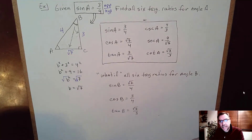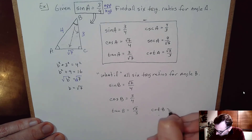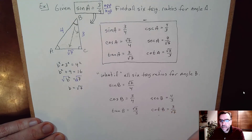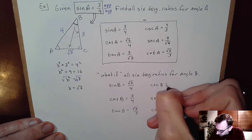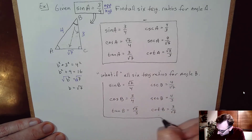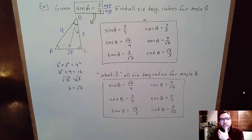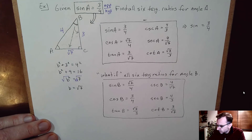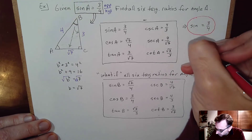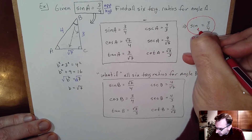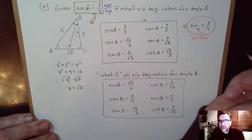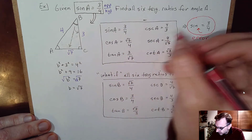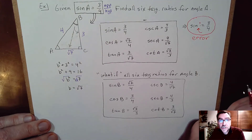Tangent of B is opposite over adjacent, so √7 over 3. The reciprocals: cotangent of B is 3 over √7, secant of B is 4/3, and cosecant of B is 4 over √7. Notice the angle really matters when finding trig ratios. If you write sine without an angle and put 3/4 you'll get marked wrong. You must specify the angle — notation matters in trigonometry.